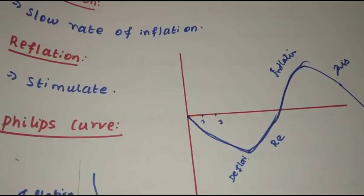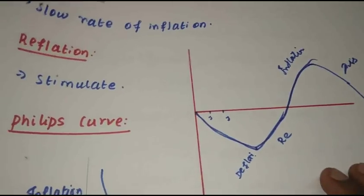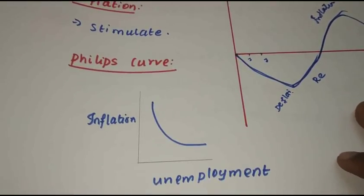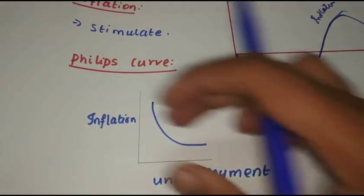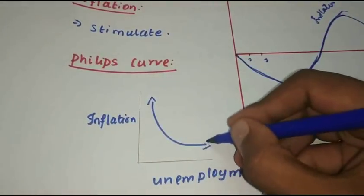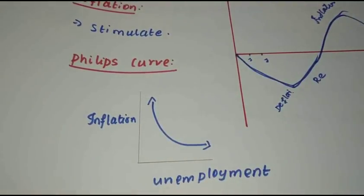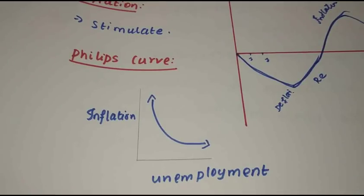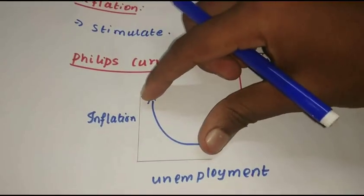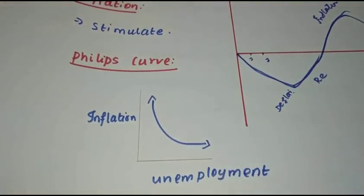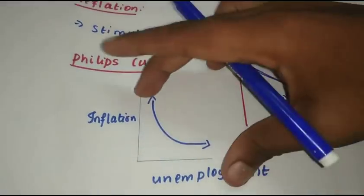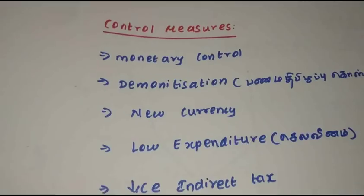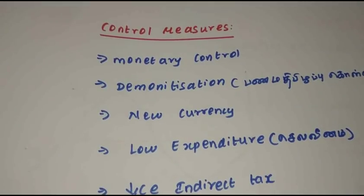Next — the Phillips curve. The relationship between inflation and unemployment: when inflation is high, unemployment is low; when unemployment is high, inflation is low. This is the inflation-unemployment tradeoff. Inflation control is the goal.